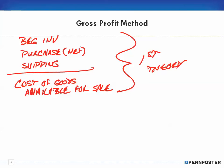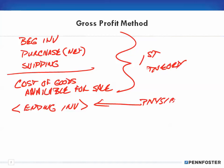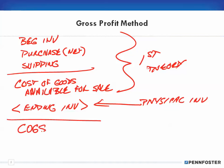From cost of goods available for sale, we then subtract out our ending inventory. Remember, we do a physical inventory in order to get that ending inventory, and when we do that physical inventory we put it on our books. When we take out our ending inventory from what's available, that gives us our cost of goods sold.